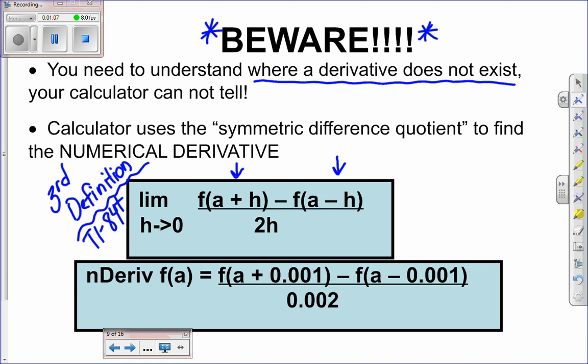And it subtracts the two. So it finds the change in y over the change in x. And so this is called the symmetric difference quotient.